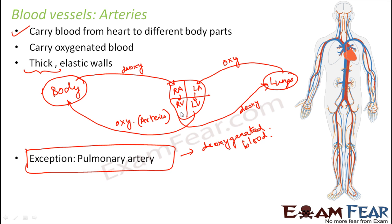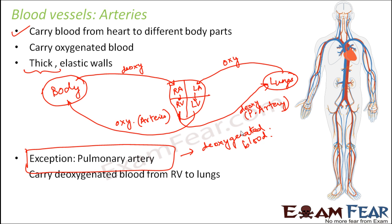Again, one more place where blood flows from the heart to other parts of the body — from heart to lungs — and this is carried by the pulmonary artery. It is called an artery because it carries blood from the heart to another body part, but it is an exception because it carries deoxygenated blood. So the pulmonary artery is an exception — it carries deoxygenated blood from the right ventricle of the heart to the lungs, which is very clear from this figure.